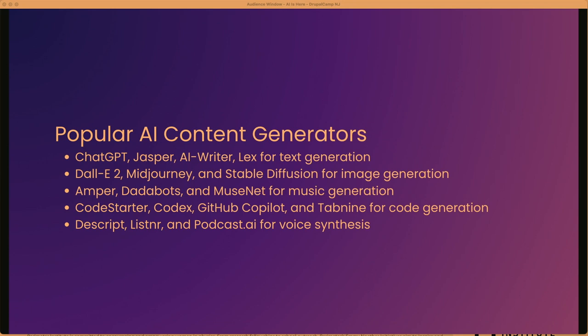Some popular AI content generators include: for text generation — ChatGPT, Jasper, AI Writer, and Lex; for image generation — DALL-E 2, MidJourney, and Stable Diffusion; for music generation — Amper, Databots, and MuseNet; for code generation — CodeStarter, Codex, GitHub Copilot, and Tabnine; for voice synthesis — Descript, Listnr, and Podcast AI. There are so many more, many of which fork and build upon each other using the same libraries.